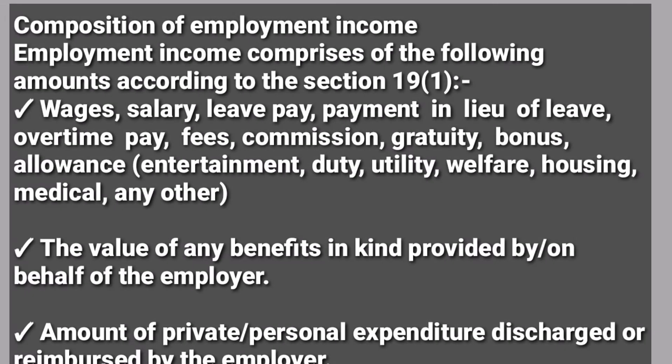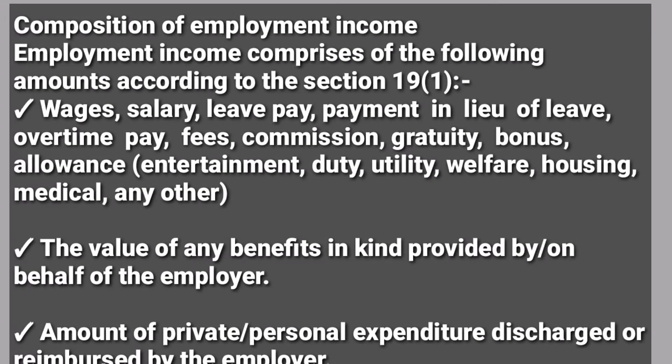Employment income comprises of the following amounts according to Section 19 of the Income Tax Act. First, it comprises of wages — wages are those daily payments, they pay you on a daily basis or per work done.